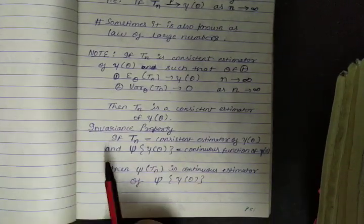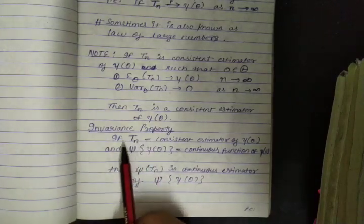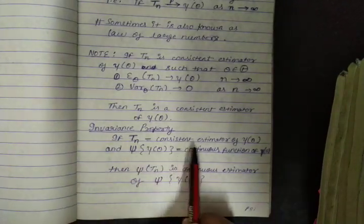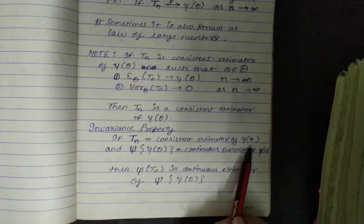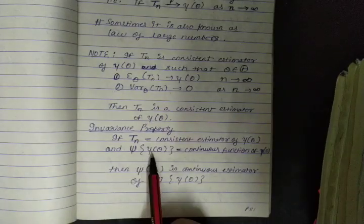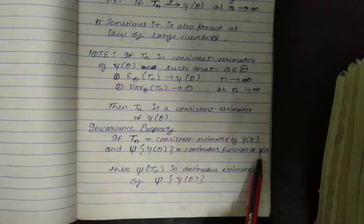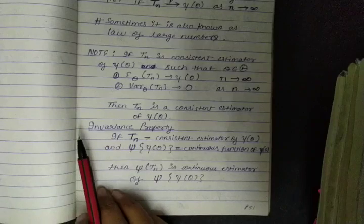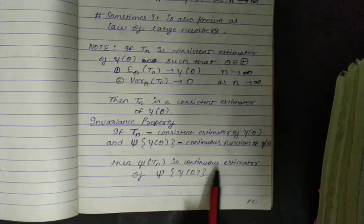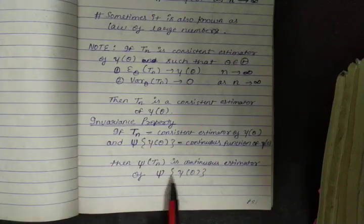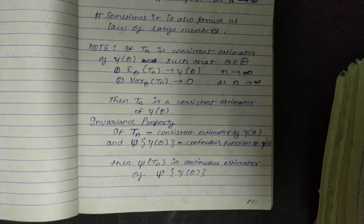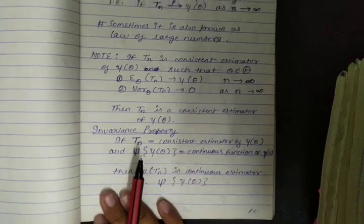One important concept here is the invariance property: if Tn is a consistent estimator of gamma theta, and psi is a continuous function of gamma theta, then psi of Tn is a consistent estimator of psi of gamma theta. It is not commonly used but you just need to know about it.